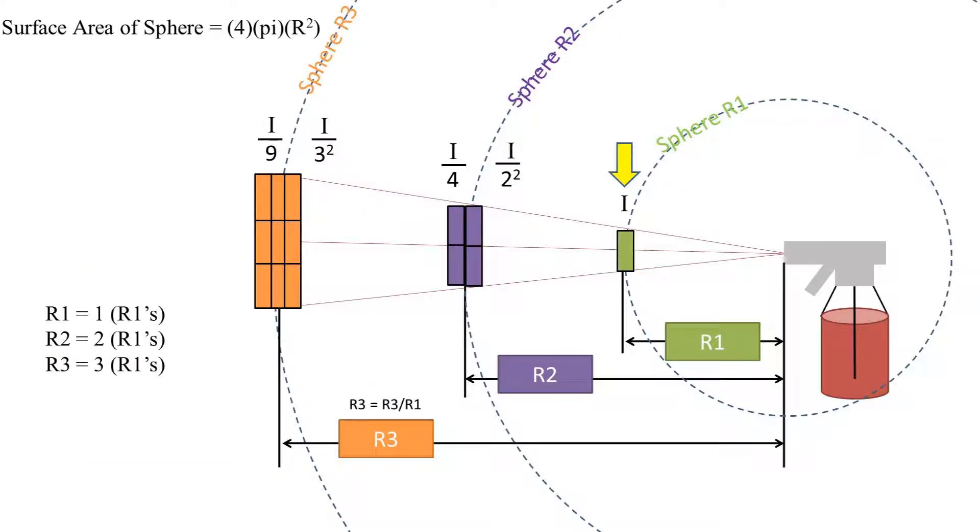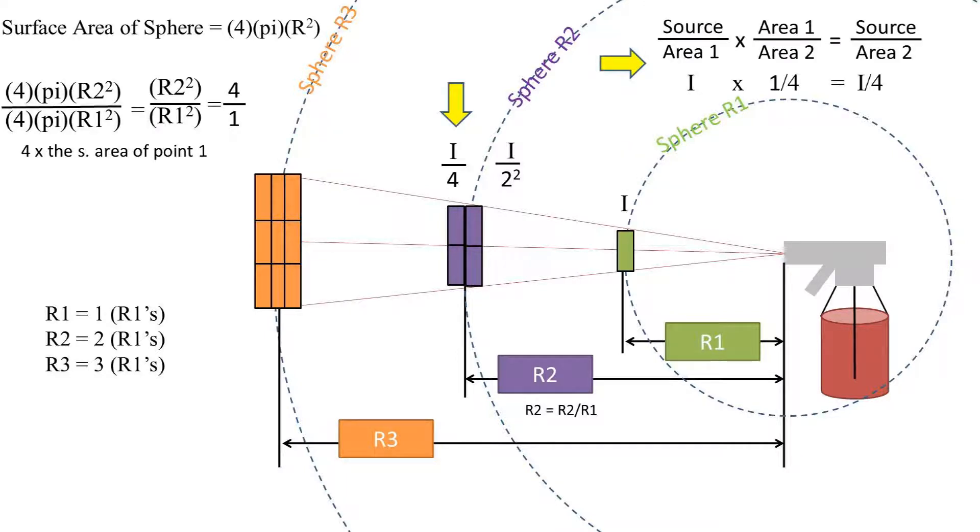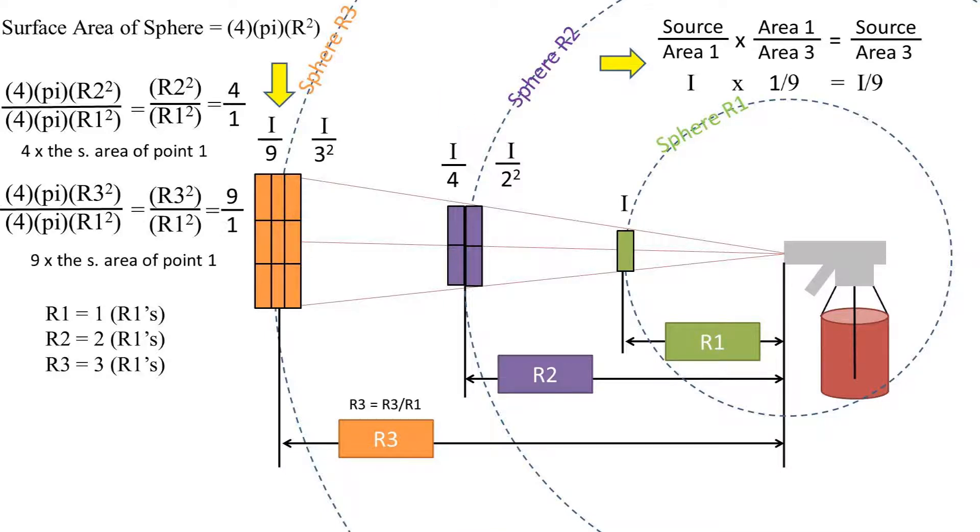Now we need to recall the inverse square law, which was covered in a previous video. The too-long-didn't-watch version is that if a sound wave travels from a single source at a distance of radius 1, the intensity is broadcasted over 1 square. At a distance of 2 radius 1s, it is broadcasted over 4 squares relatively. And a distance of 3 radiuses, it is broadcasted over 9 squares. The intensity traveling outwards is broadcasted over the inverse square of the number of initial radiuses it is from the source point.